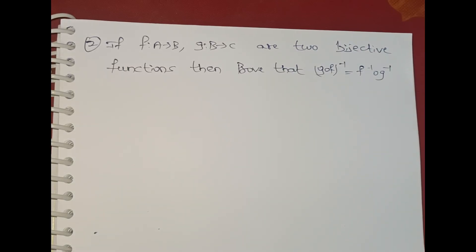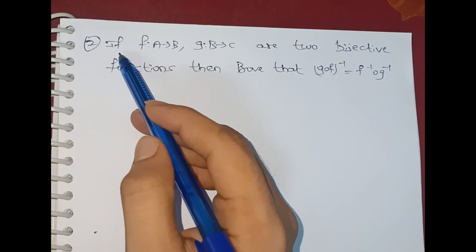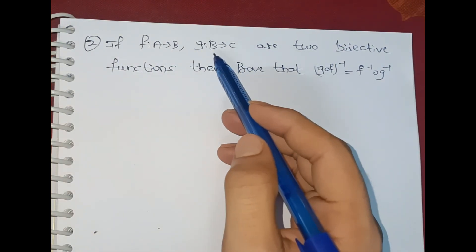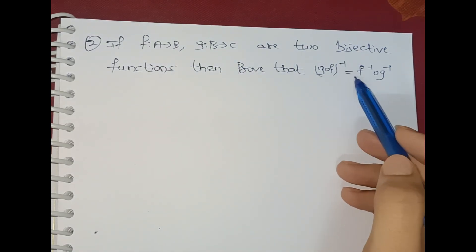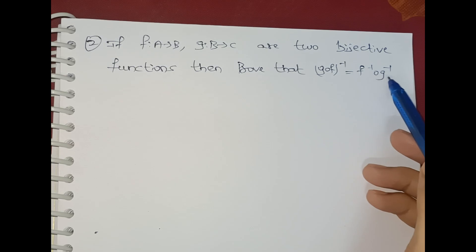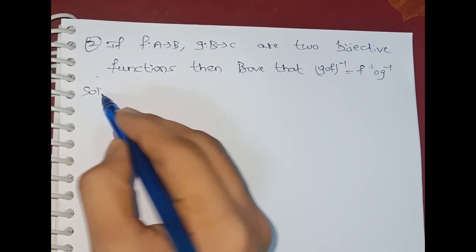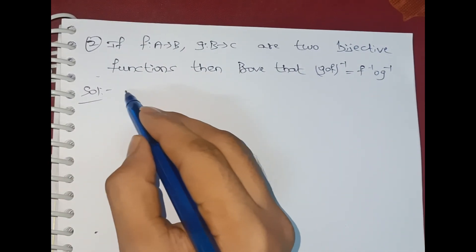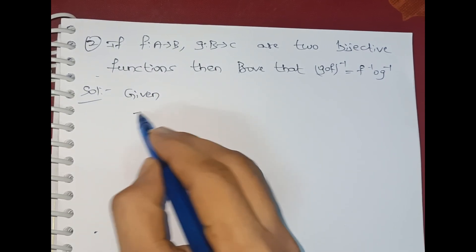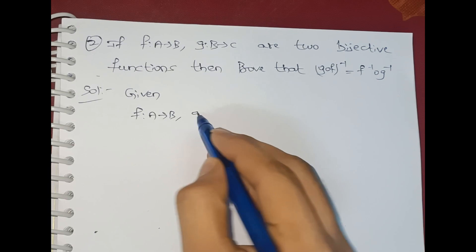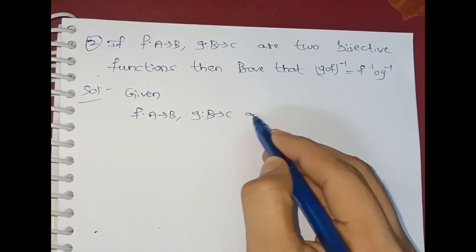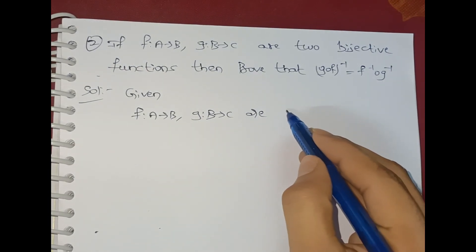Hi everyone, welcome to our channel. In this chapter on functions, we discuss the following question: if f maps A to B and g maps B to C are two bijective functions, then prove that (g∘f)⁻¹ is equal to f⁻¹∘g⁻¹. First, given f:A→B and g:B→C are bijections.